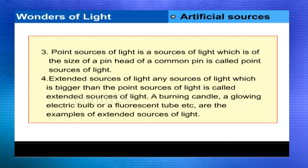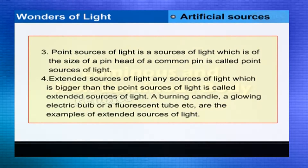A point source of light is a source of light which is of the size of a pinhead and is called a point source of light. Any source of light which is bigger than the point source is called an extended source of light. A burning candle, a glowing electric bulb or a fluorescent tube are examples of extended sources of light.